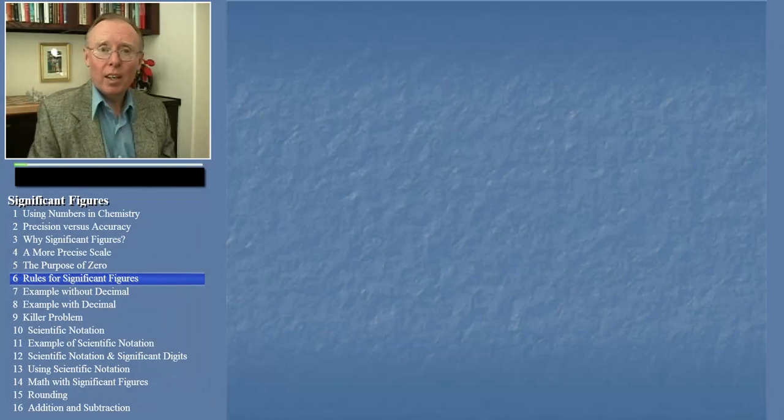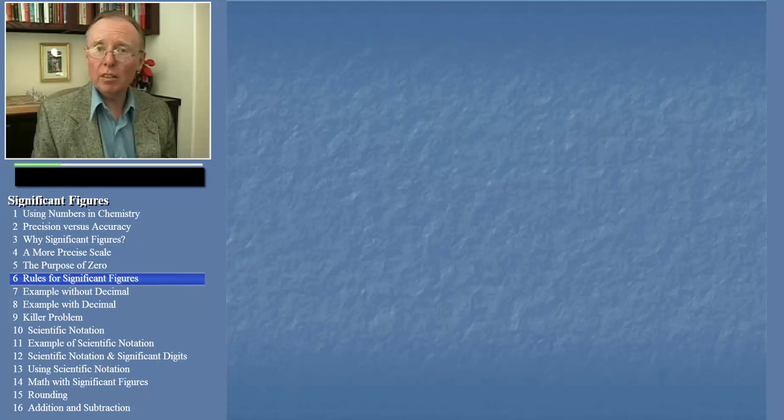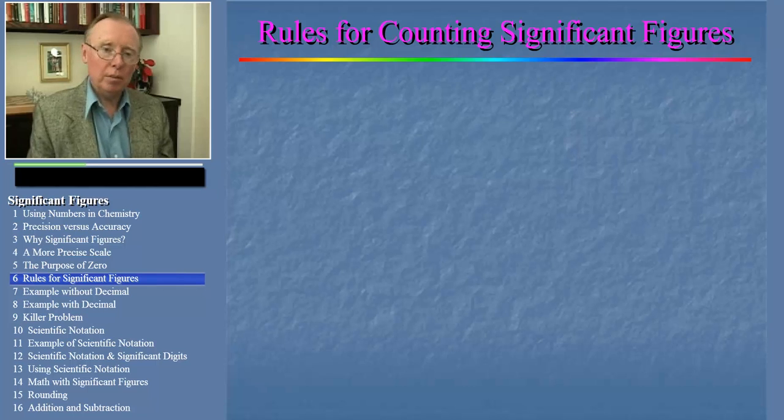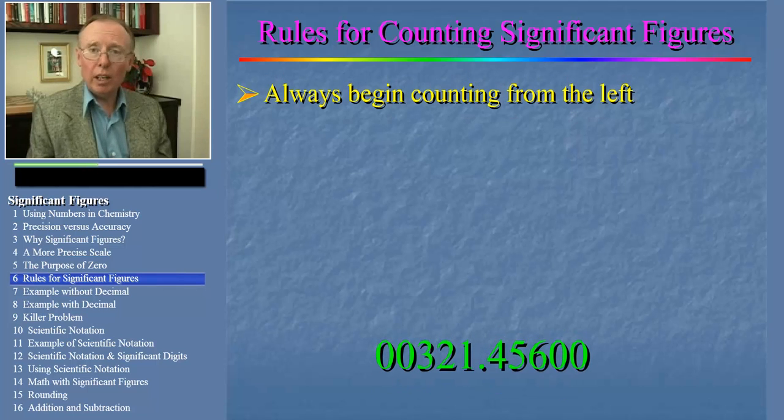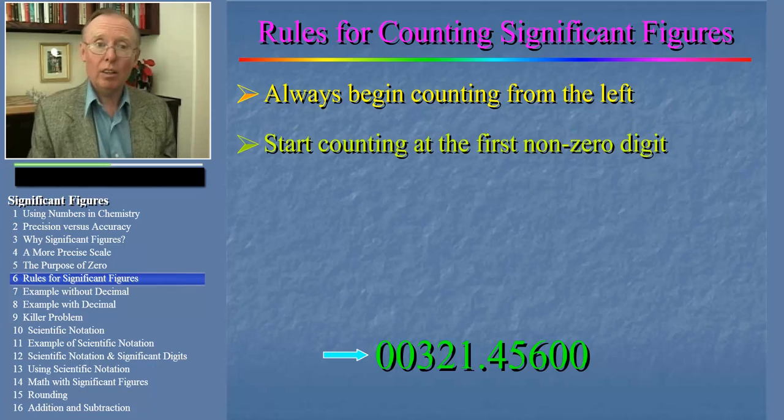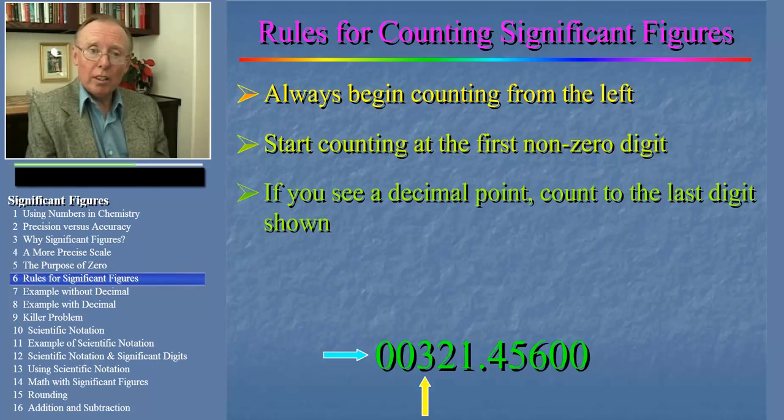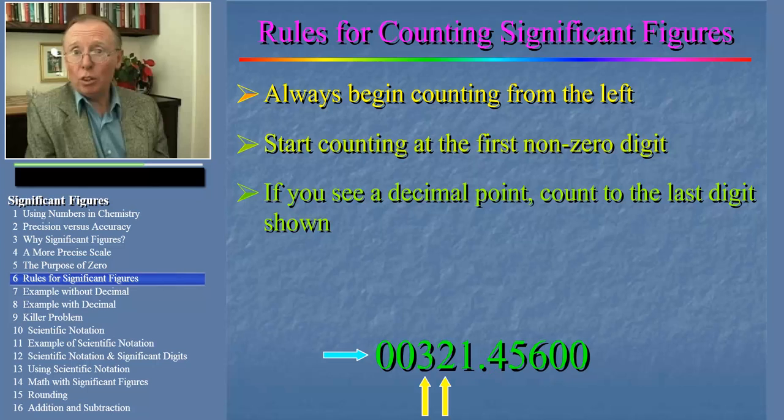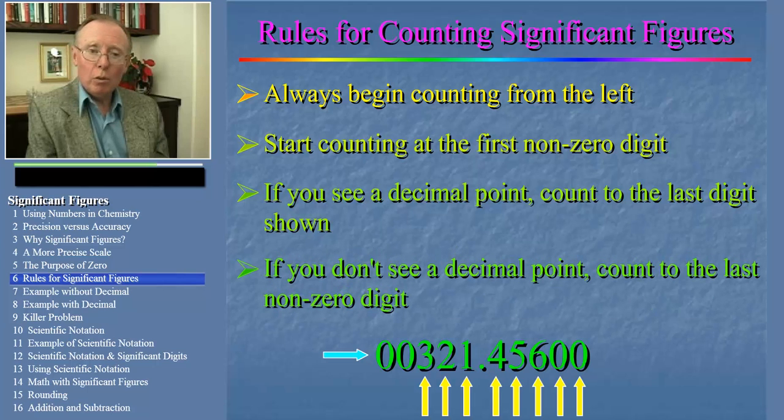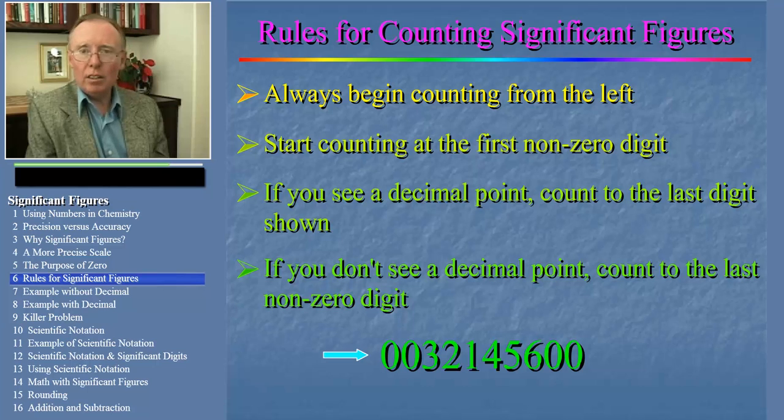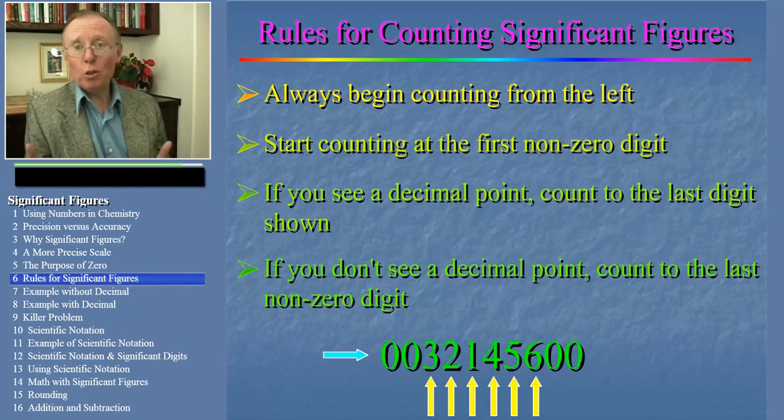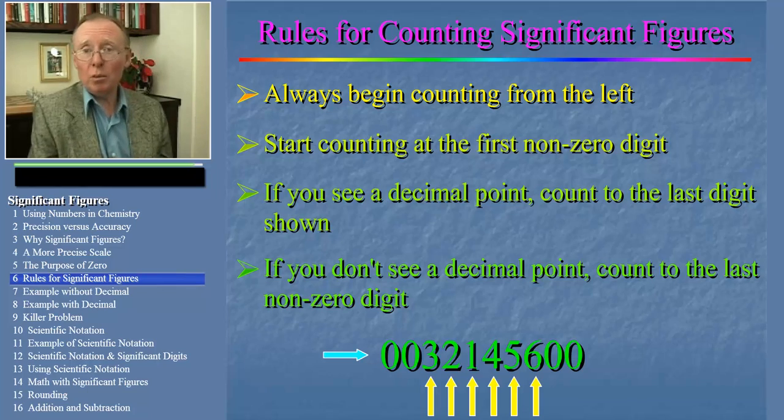So, are you getting the picture? When we look at any measured value, the way it is written communicates the precision of the measurement by the number of significant digits that are shown. Let's look at the rules for counting significant figures or digits. First, always begin counting from the left. Second, start counting at the first non-zero digit. Third, if you see a decimal point, count to the last digit shown. Fourth, if you don't see a decimal point, count to the last non-zero digit. Now, as usual, these abstract rules don't mean much until we see them in action.